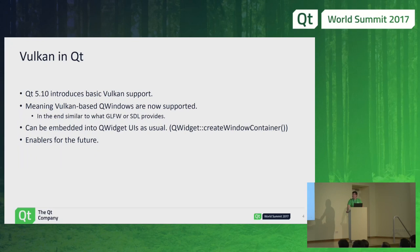This also lays the foundations for the future. For example, we know that the Qt 3D team has already been experimenting with a Vulkan renderer, which uses the same infrastructure — it uses QVulkanInstance, so it uses the enablers introduced in Qt 5.10.